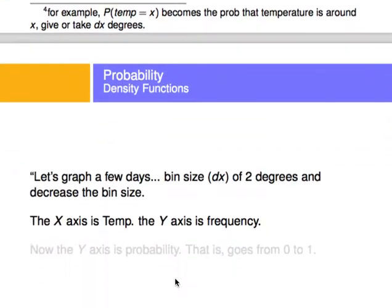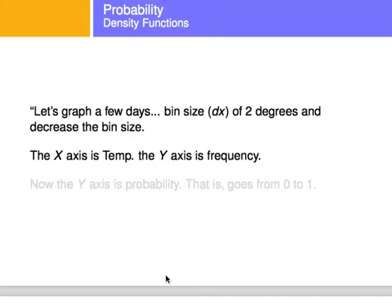For example, we're going to do the following. We're going to say that we're going to look at the temperature, right? And we want to know the probability of the temperature being in a very small range, right?